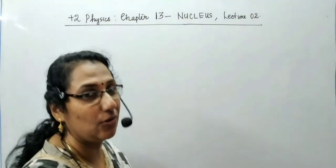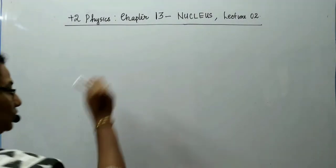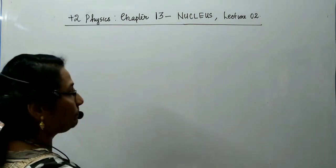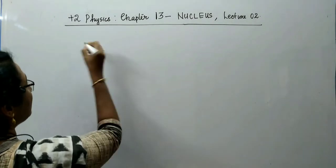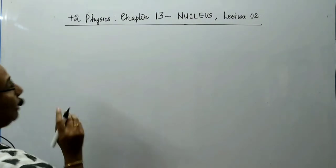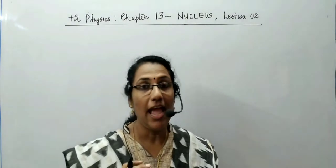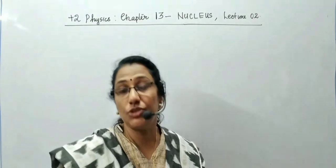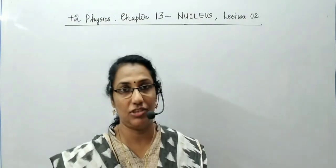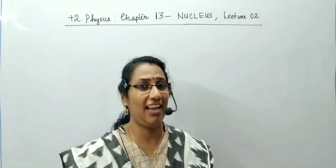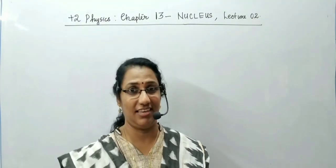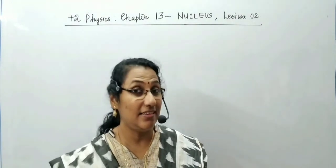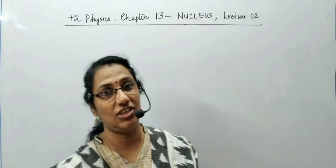So today, having discussed the introduction in the first lecture, we are going to a topic called mass defect. Our topic is mass defect and the energy related to the mass defect, which we call binding energy. But in order to understand the terms mass defect and binding energy, we have to consider the great scientist Einstein. We are going to start our chapter by considering Einstein's mass-energy equation.